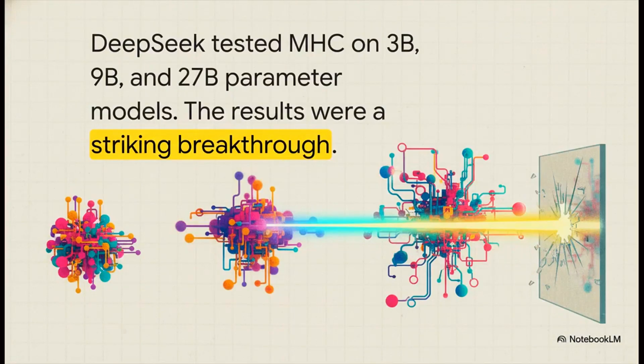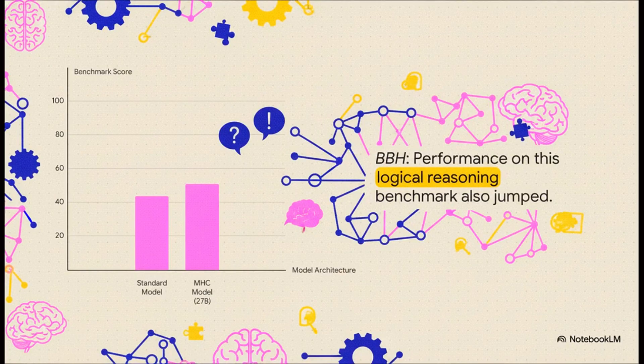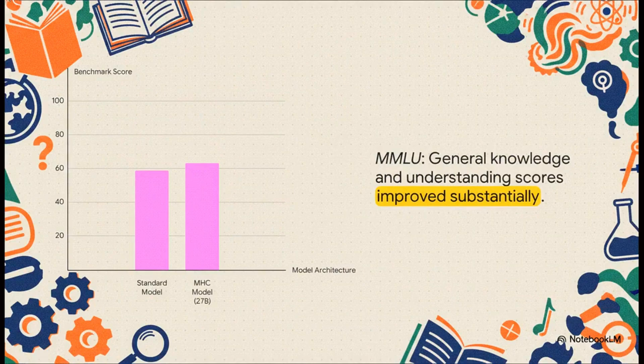Okay, cool theory. But did it actually work? Well, the results kind of speak for themselves. On the GSM-8K math test, their MHC model got a huge score boost. Same story on BBH, which is a really tough logical reasoning benchmark. Another big jump. And on MMLU, which measures broad knowledge, yep, you guessed it, the same substantial improvement.